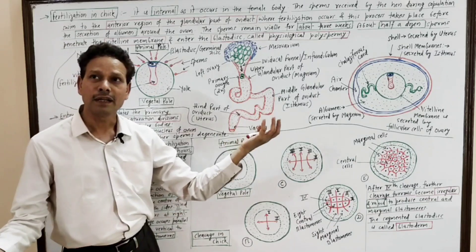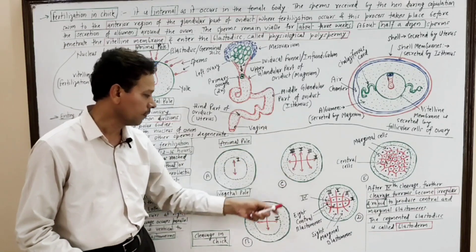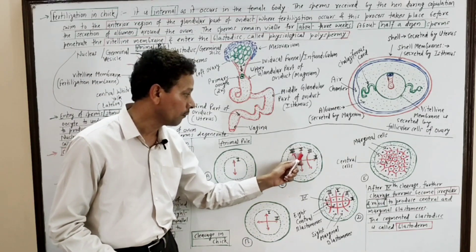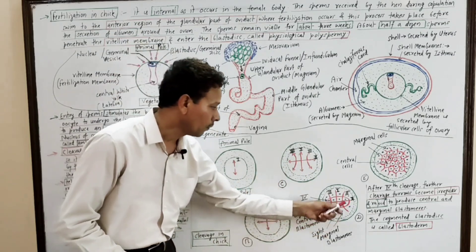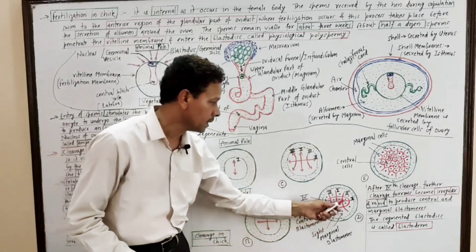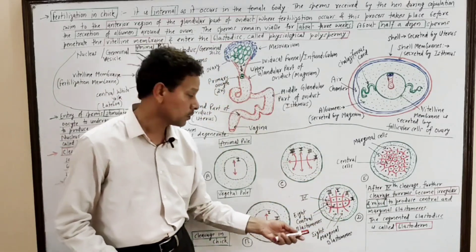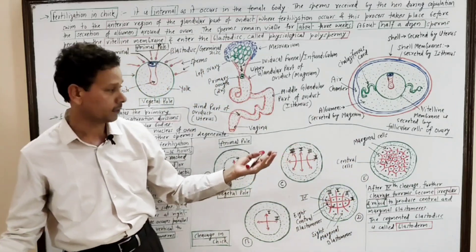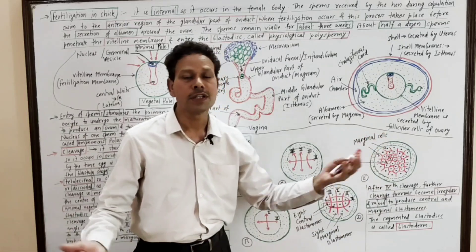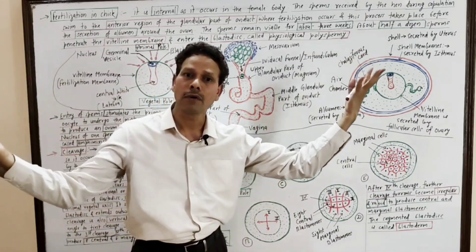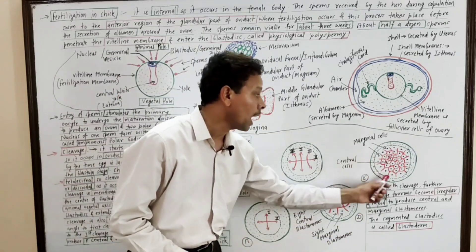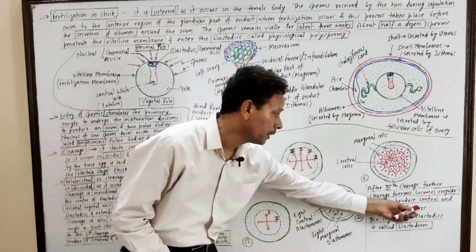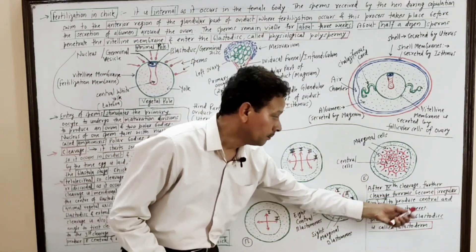First cleavage is vertical and meridional. Second cleavage is at right angle to the first. Third cleavage is almost parallel to the first and occurs on both sides. Fourth cleavage is again vertical, resulting in eight complete inner blastomeres and eight incomplete outer peripheral blastomeres. After the fourth cleavage, division becomes irregular and very rapid, and the entire blastodisc having a mass of blastomeres — the segmented blastodisc — is called the blastoderm.